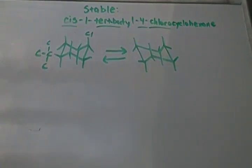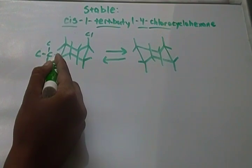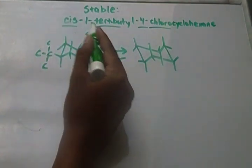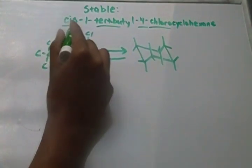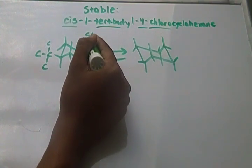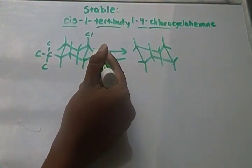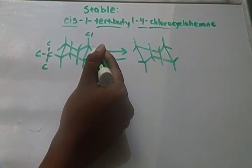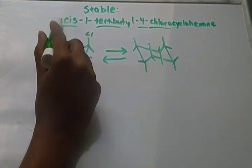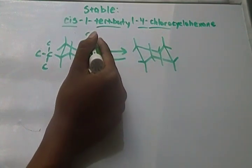So I put my chlorine right there. That's going to be the first conformation. I randomly chose to put the tert-butyl on equatorial up, and in order to keep it cis, I had to put the chlorine on the fourth carbon going up. If I put it on the equatorial position, it would be going down, and that would be trans, not cis. So I had to put it up.